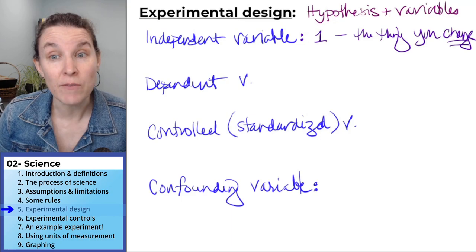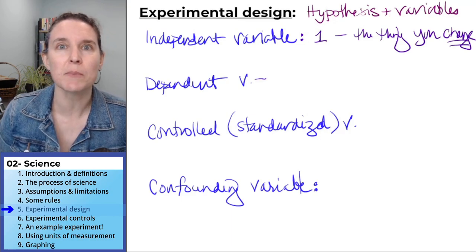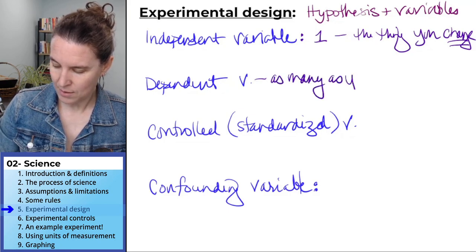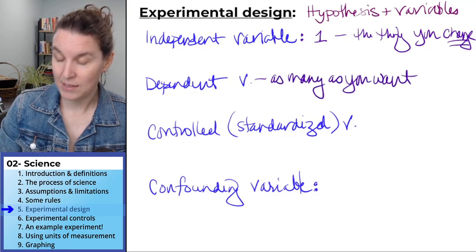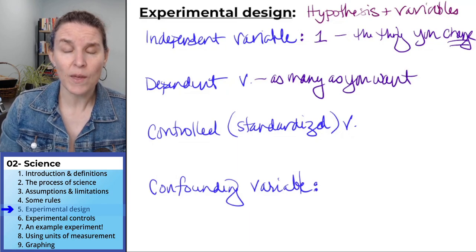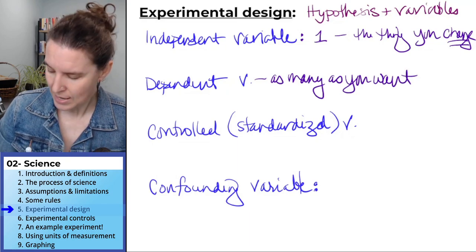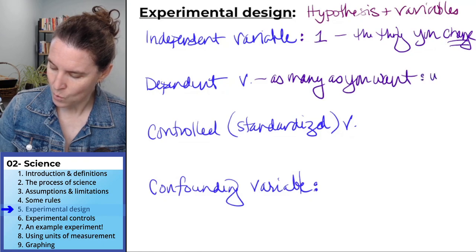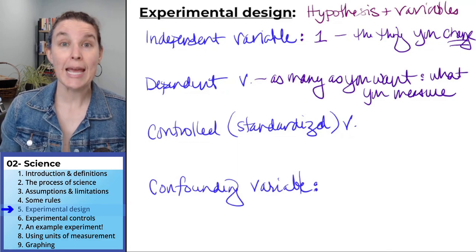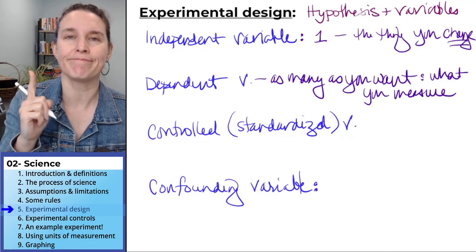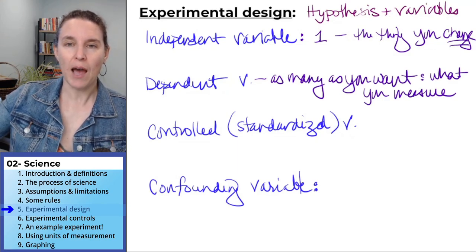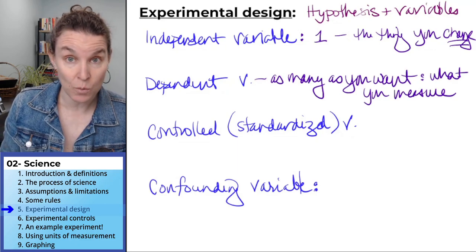The dependent variable, glory days, you can have as many as you want. And not only can you have as many as you want, that's because that's what you're measuring. The dependent variable is what you measure. Independent variable, just one, and it's the thing you're changing. Dependent variable, how many measurements do you want to take? How many things do you want to look at?